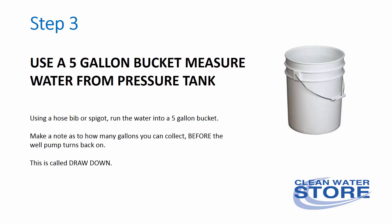Using a five gallon bucket or other container, measure the water from the pressure tank. Run the water from the pressure tank out of a hose bib until you hear your well pump click and turn back on again. You're measuring how many gallons come out of your pressure tank until the well pump turns on — this is called drawdown. Usually it'll be somewhere between five and 20 gallons, depending on the size of your pressure tank.